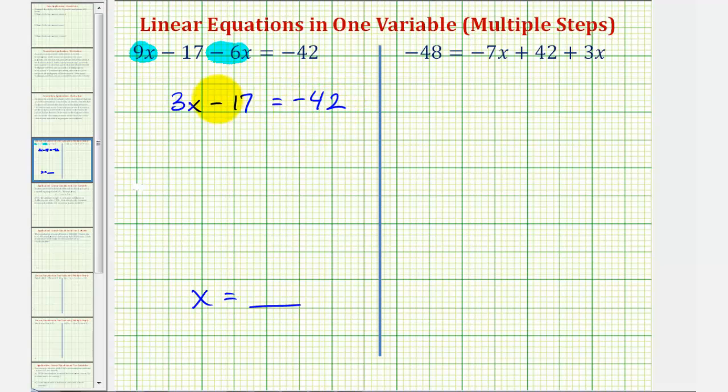For the next step, we want to isolate the variable term, or in this case three x, which means we want to undo minus 17. The opposite operation of subtraction is addition, so to undo the minus 17, we'll add 17 to both sides of the equation. We add 17 to both sides to maintain equality.